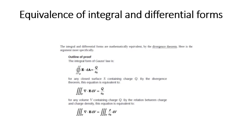We can obtain the equivalence of the integral and differential forms — both are the same. If asked to show the equivalence, we start with the formulas. The integral and differential forms are mathematically equal by the divergence theorem. The integral form of Gauss law is: the surface integral of E dot dA equals Q over epsilon zero, where Q is the charge enclosed in the surface and E dot dA is the flux.